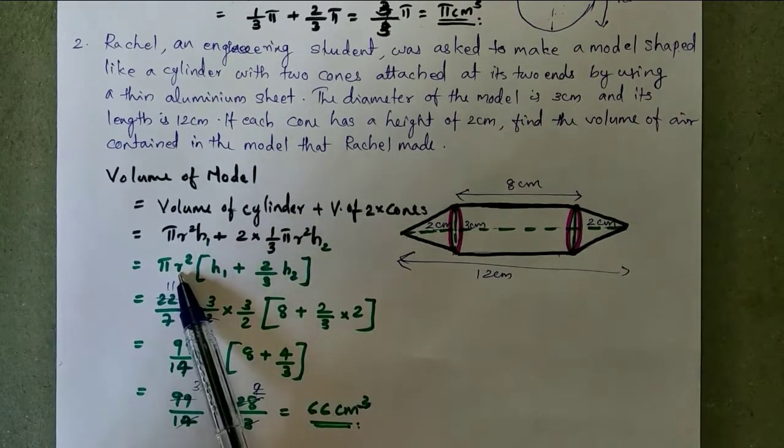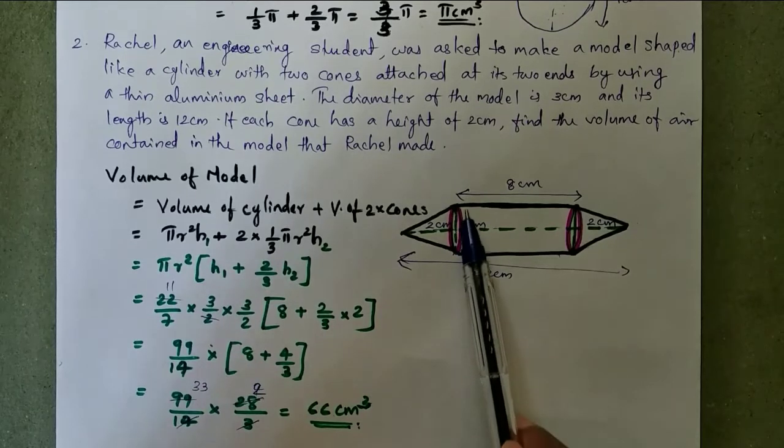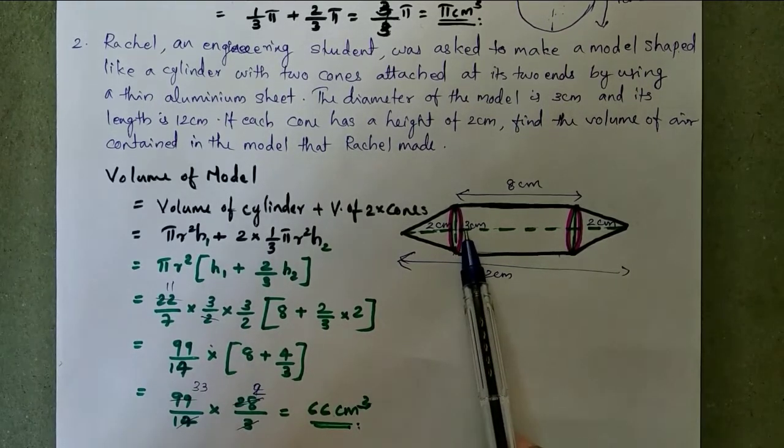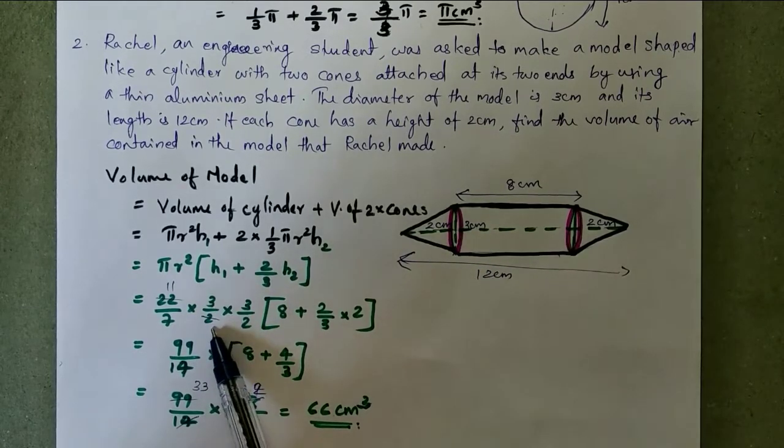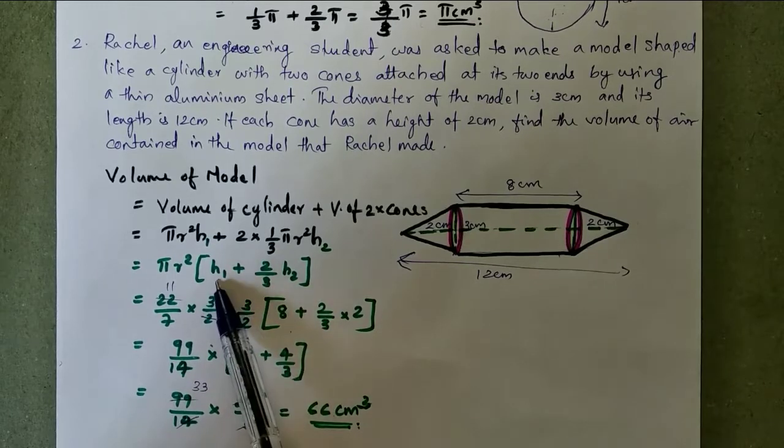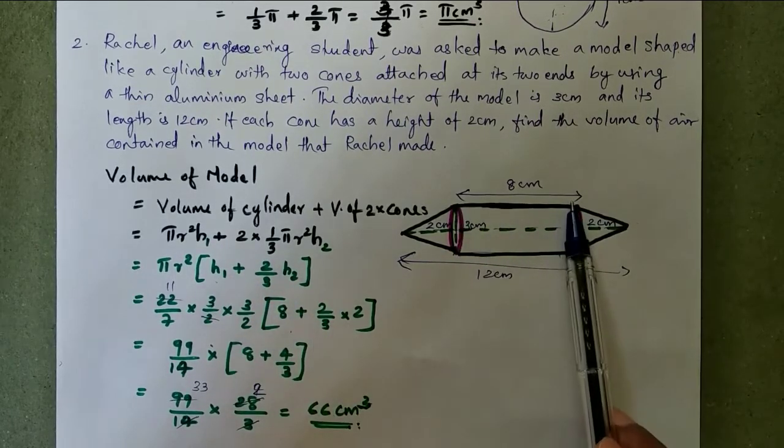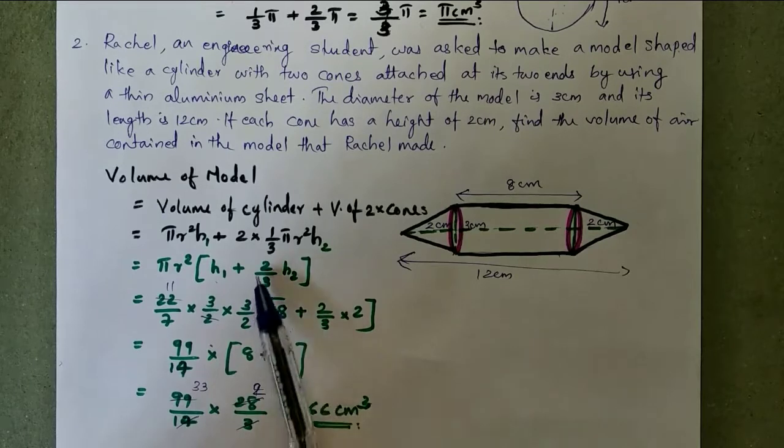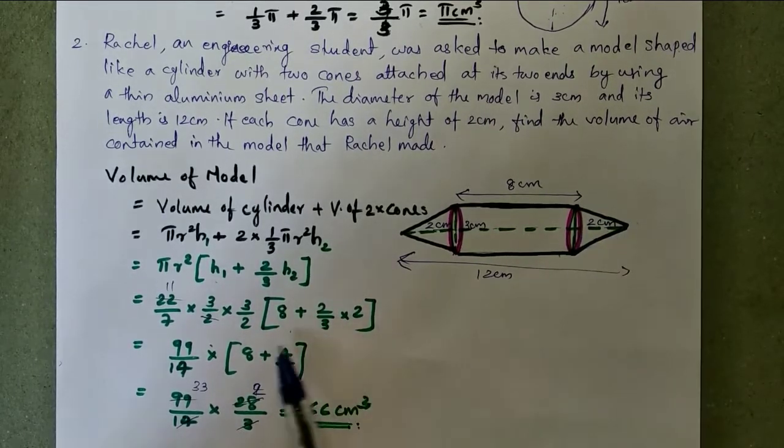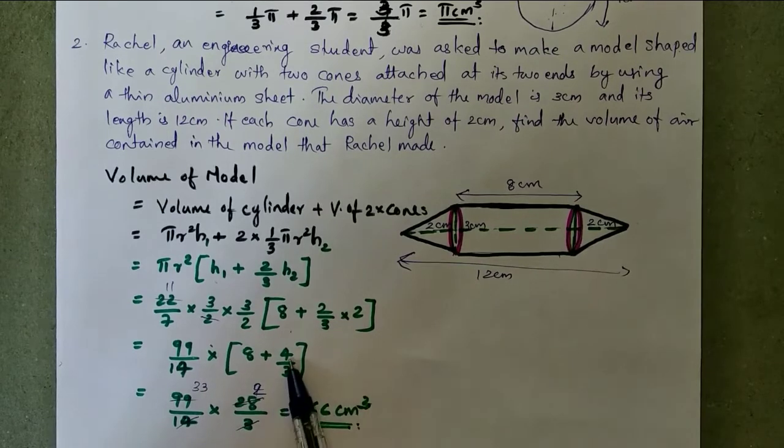Substitute the values: radius is 3 centimeter is the diameter, so half of 3, 3/2, 3/2 into 3/2. Bracket start: h₁, h₁ means this height of the cylinder, that is 8, plus 2/3 into h₂. h₂ means 2, okay, in the bracket.